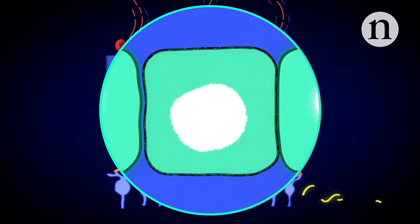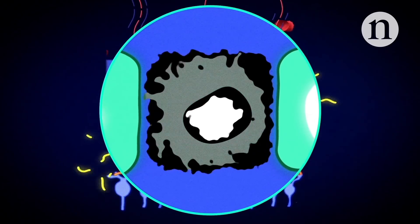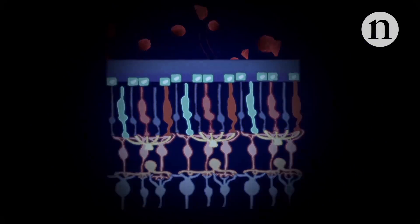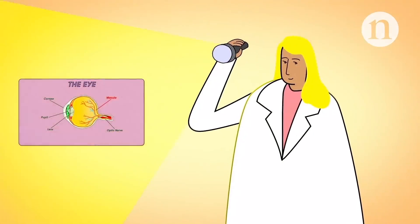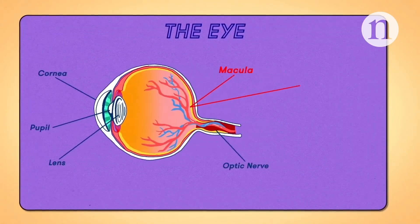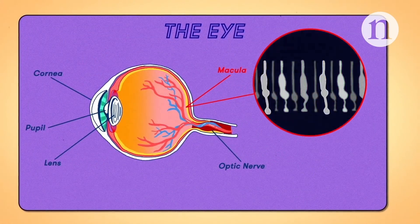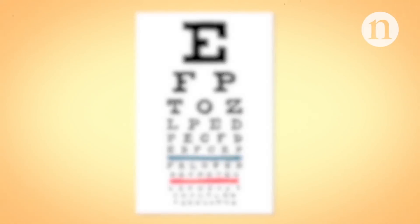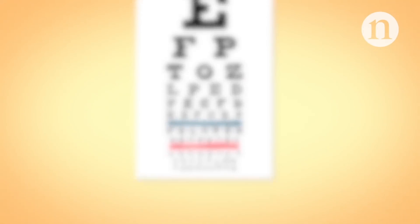Once these RPE cells are damaged, they don't regenerate, meaning they can no longer support the photoreceptors. The macula is the part of the retina with the highest photoreceptor concentration. When the photoreceptors here start to die, detailed vision needed for tasks like reading begins to disappear irreversibly.